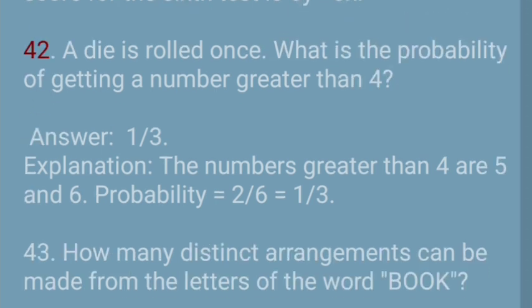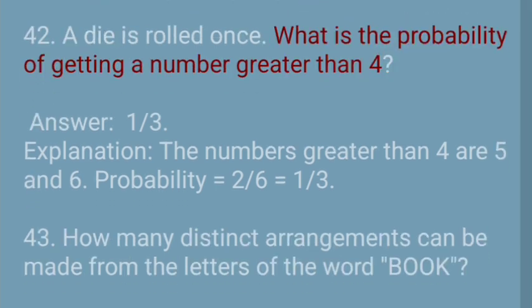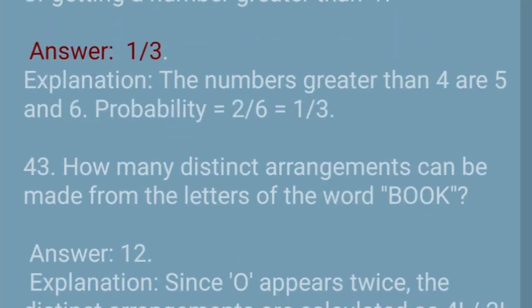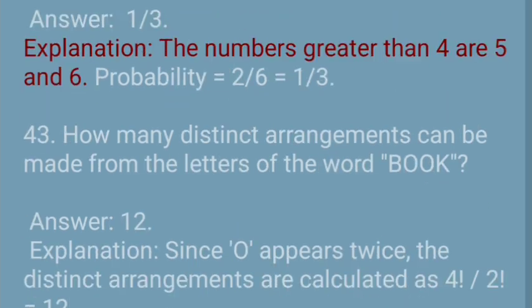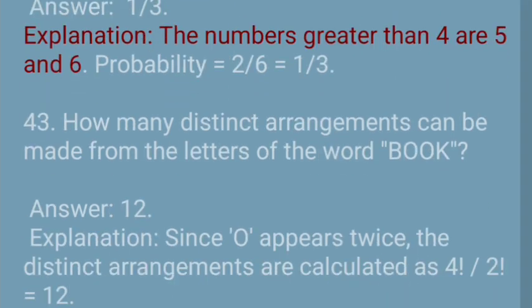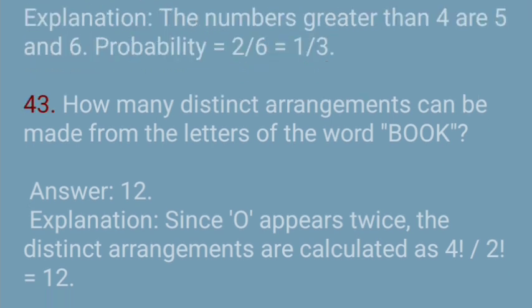Question 42: A die is rolled once. What is the probability of getting a number greater than 4? Answer: 1/3. Explanation: The numbers greater than 4 are 5 and 6. Probability = 2/6 = 1/3.